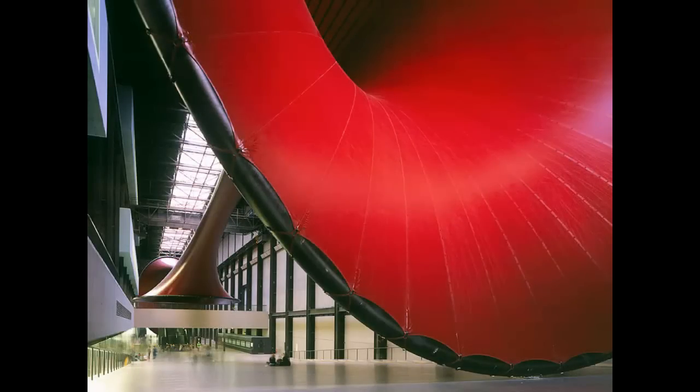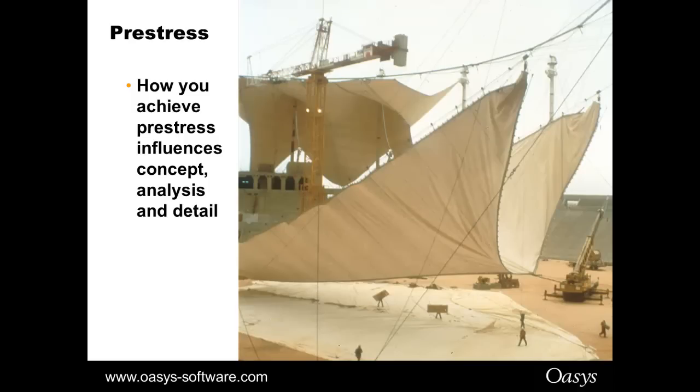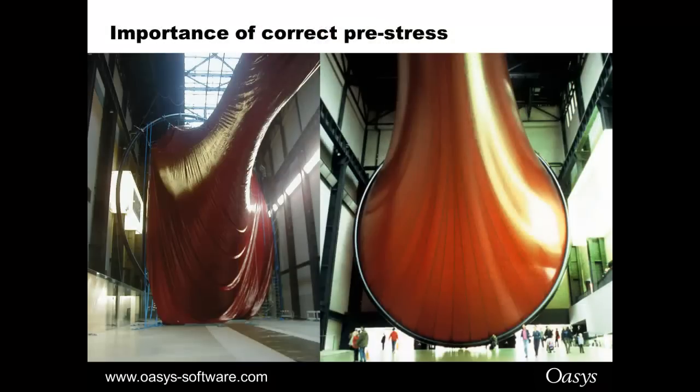Form finding will give you the geometry and part of that geometry then feeds into the fabrication process. This is a Margiela sculpture in the Tate Modern. You have the fabric cutting patterns, the strips of fabric which are cut in a tapering type form which you then when you fix them together you get the conic. Another important thing to get out from the form finding is the pre-stress. How you get the pre-stress into the fabric structures or cable nets is crucial to the final form. If you get the pre-stress wrong, if the pre-stress is out of balance you will get tension fields or wrinkles in your fabric.